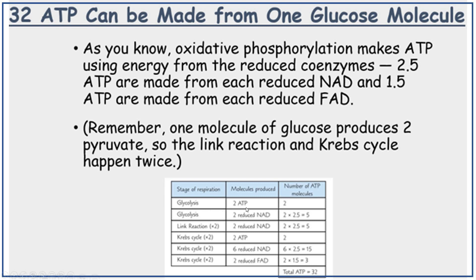Glycolysis produces two ATP and two reduced NAD. The link reaction produces two reduced NAD. The Krebs cycle produces two ATP, six reduced NAD, and two reduced FAD. Each NAD contributes 2.5 ATP and each FAD contributes 1.5 ATP. Adding all of these up gives a total of 32 ATP per glucose molecule.